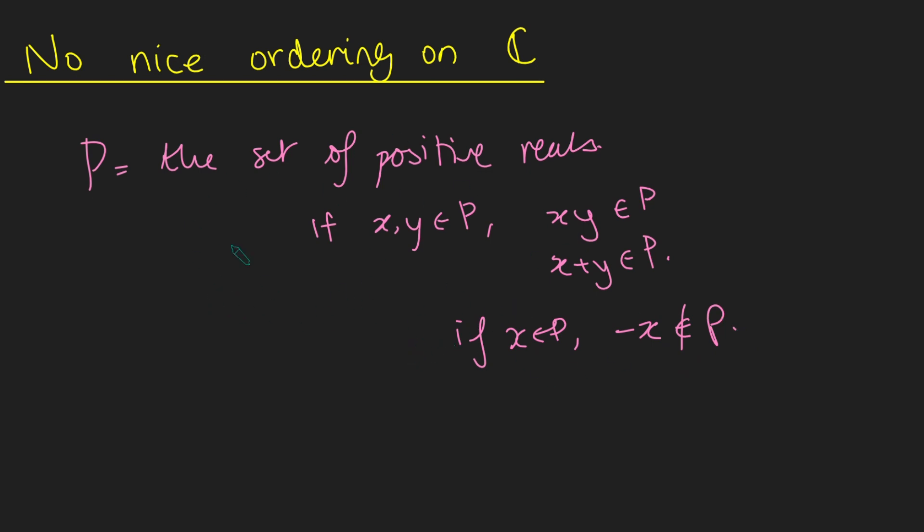Okay, so let's see why we can't do this. We're going to prove this by contradiction. So we're going to suppose for contradiction there is this set of positive complex numbers. Maybe I'll call it P hat. P hat is the set of complex positives. And now there's two possibilities here. Either i, the square root of minus one, is in P hat or it's not. I'm just going to show you what happens when i is in P hat and show it leads to a contradiction. You can do something very similar if i is not in P hat. So suppose i is in P hat.